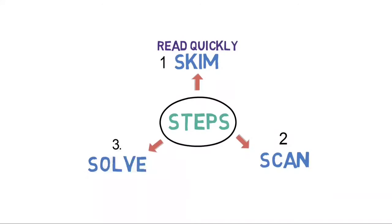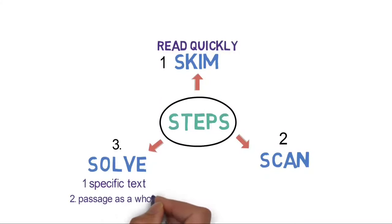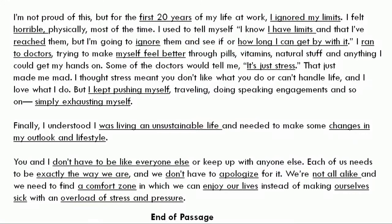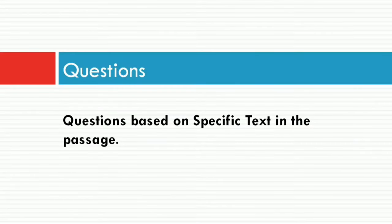Now let's look into Step 3 of our strategy: Solve. There are two kinds of questions. Number 1: questions where you will have to go to a specific text in the passage to get the answers. Number 2: questions where you will have to understand the passage as a whole. First, I have picked questions based on specific text in the passage, and for your benefit I am adding the specific text at the top of each slide. So let's start with the questions.